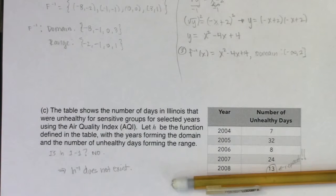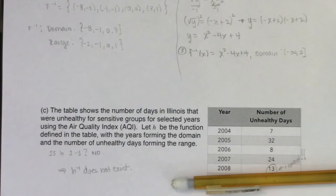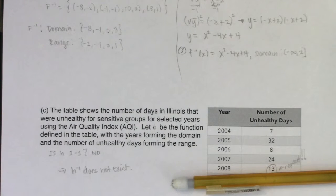So with that, we're going to flip the page, graph some functions, try to get some domains and ranges, determine if things are one-to-one, and find some inverse functions. I know it sounds like a lot, and it will be, but we'll tackle it.